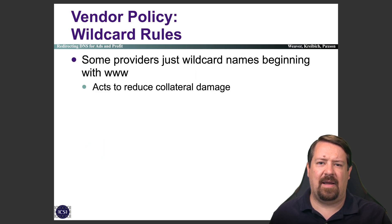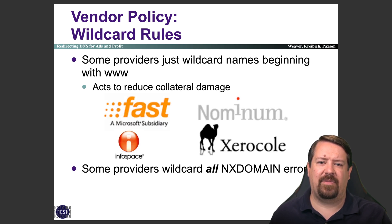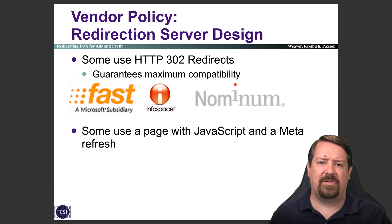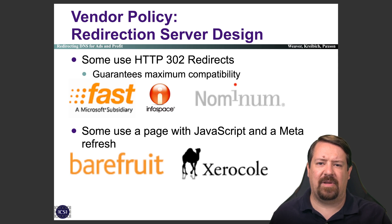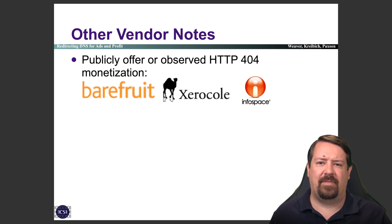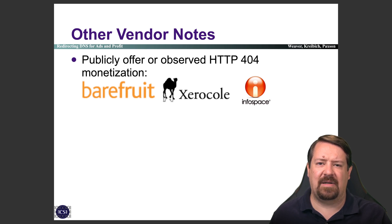There are a number of these vendors and they have different behaviors. Some providers just wildcard names beginning with 'www', while some providers wildcard all NX domain errors. Some use HTTP 302 redirects — header information redirecting the browser — whereas others load a page with JavaScript and a meta refresh, which is dependent on the client's JavaScript to perform the redirection. One of them uses the JavaScript mechanism but obfuscates it to make it difficult for humans to read. Additionally, three providers publicly offer HTTP 404 monetization — meaning not only is DNS being redirected, but valid web pages are going through a proxy that looks for an HTTP 404 and includes ads on those pages as well.